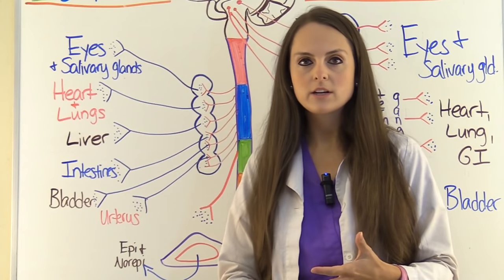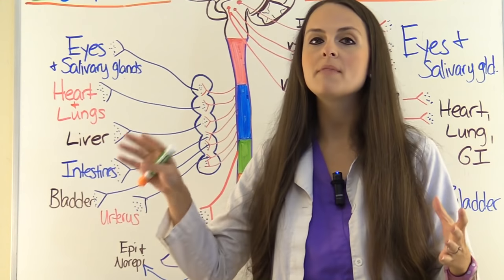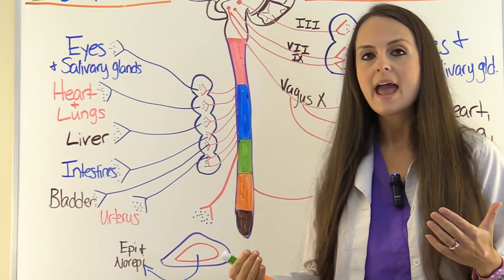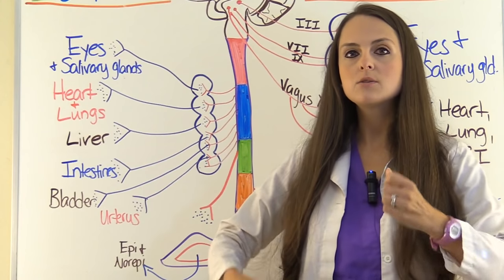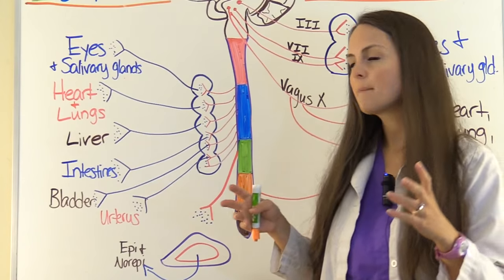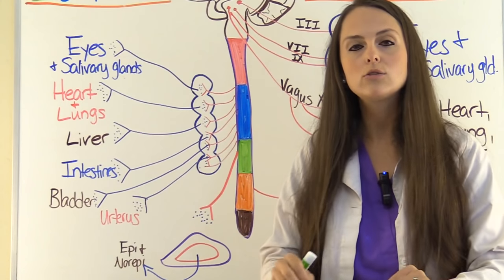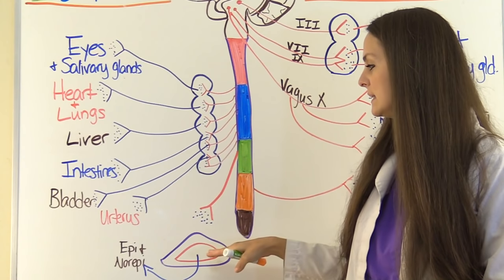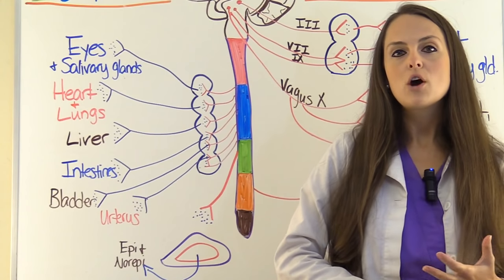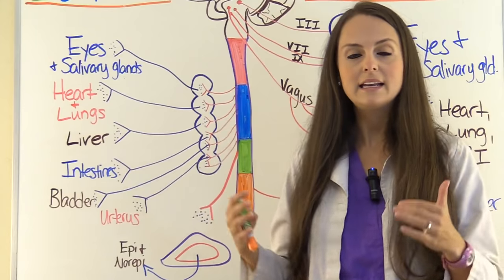How does the sympathetic nervous system stay stimulated? Because we may need to run from that bear for a while. Another pre-ganglionic neuron comes out of the spinal cord, made of cholinergic fibers releasing acetylcholine, but it doesn't go through a ganglia — it directly stimulates the adrenal glands, specifically the adrenal medulla. That produces our catecholamines, releasing epinephrine and norepinephrine into the blood so we can keep running.